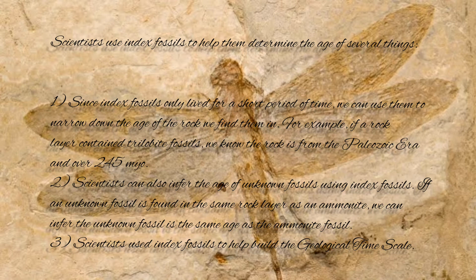Second, scientists can also infer the age of unknown fossils using index fossils. If an unknown fossil is found in the same rock layer as an ammonite, we can infer the unknown fossil is the same age as the ammonite fossil. Third, scientists use index fossils to help build the geologic time scale.